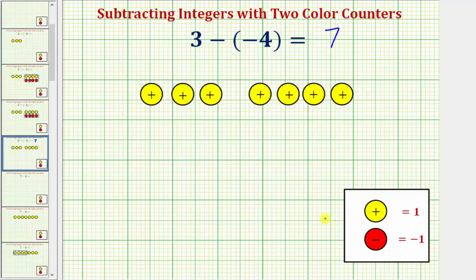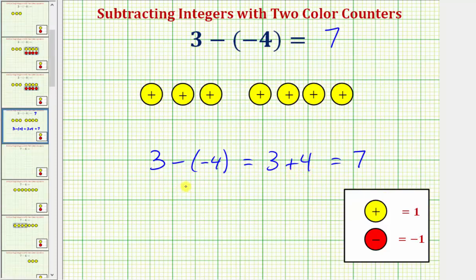So using the colored counters, we've shown that three minus negative four is equivalent to three plus four, which equals seven. Removing four red counters is equivalent to adding four yellow counters, which means subtracting a negative is equivalent to adding a positive.